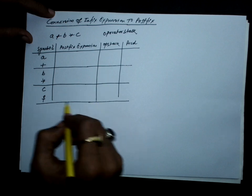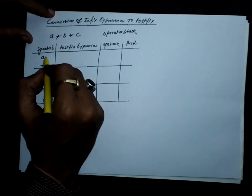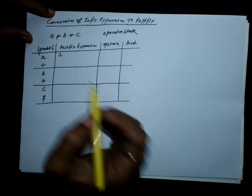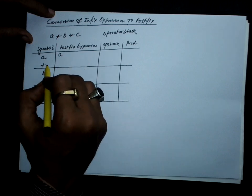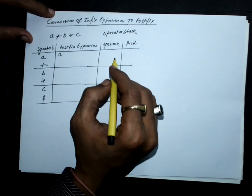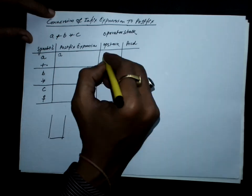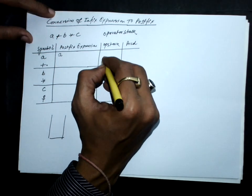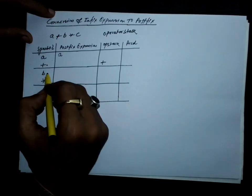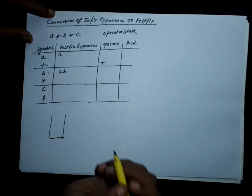The conversion rule says: if we have an operand, add it to the postfix expression directly. If we have an operator and the operator stack is empty — initially the stack will be empty — push the operator on the stack. Then when we have the next operand, add it to the postfix expression.